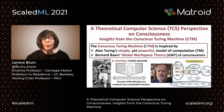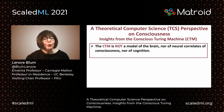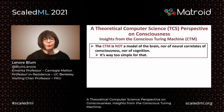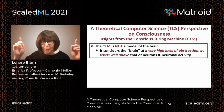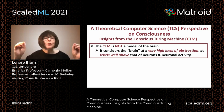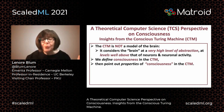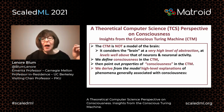Before going ahead, I'd like to make two points. The first is that the Conscious Turing Machine is not a model of the brain, nor of neural correlates of consciousness, nor of cognition. It's way too simple for that. It considers the brain at a very high level of abstraction, at levels well above that of neurons and neuronal activity. After defining the CTM, we define consciousness in the CTM, then point out properties of consciousness in the CTM.